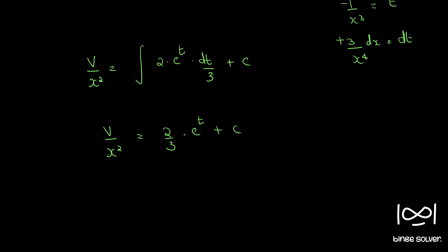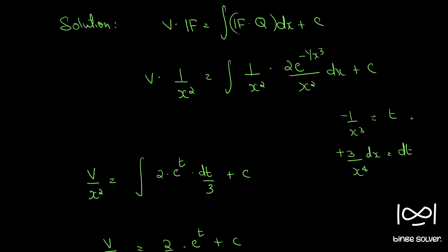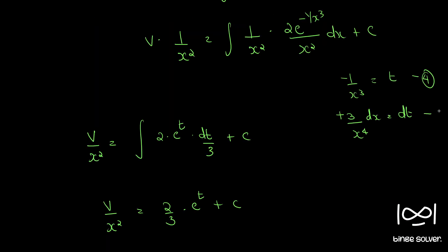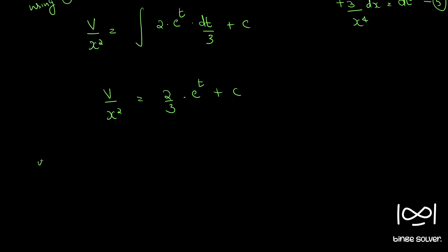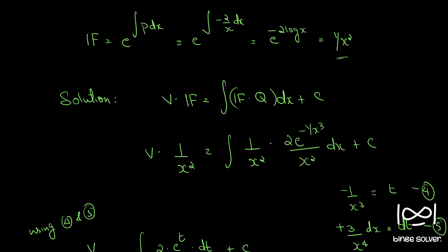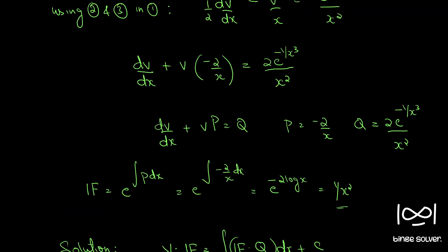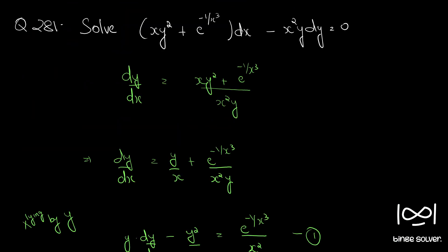Now substituting back t equal to minus 1 by x cubed and v equal to y squared, we get y squared by x squared equal to 2 by 3 times e raised to minus 1 by x cubed plus c. This is the final answer, where c is an arbitrary constant. These are the steps for the solution to question number 281.